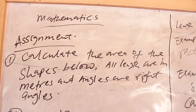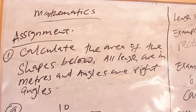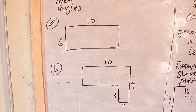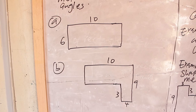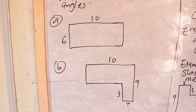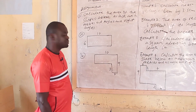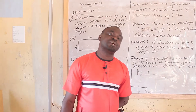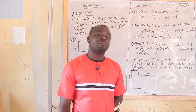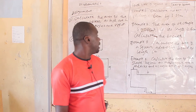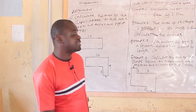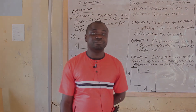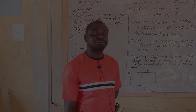Assignment: calculate the area of the shapes below. All lengths are in meters and angles are right angles. We are coming to the end of today's lesson. See you people next week. Thank you.